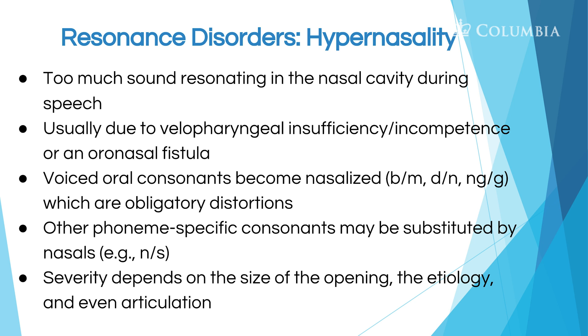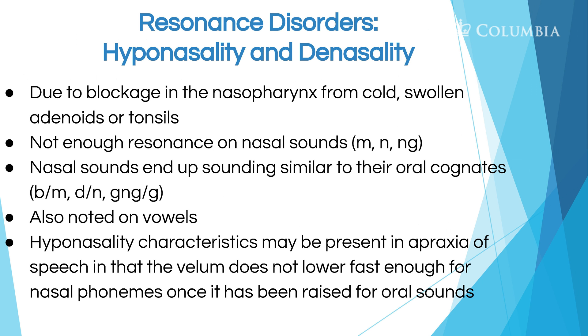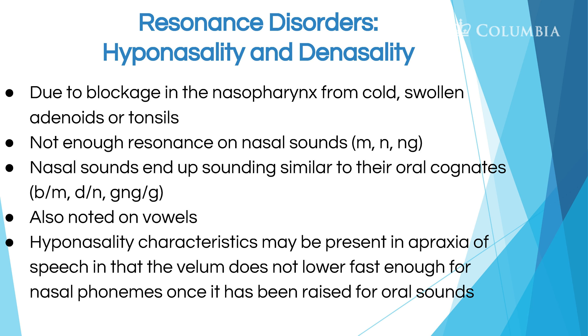Severity depends on the size of the opening, the etiology, and even articulation. In hyponasality, the nasal sounds end up sounding similar to their oral cognates — the M sound becomes a B, the N sound becomes a D, and the NG sound becomes a G. These are also noted on some vowels. Hyponasality characteristics may also be present in apraxia of speech, where the velum does not lower fast enough for nasal phonemes once it has been raised for the oral sounds.